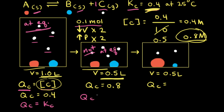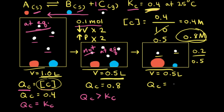In this case, QC is greater than KC, which tells us we have too many products and not enough reactants. Therefore, the net reaction goes to the left to get rid of some of the products and increase the amount of reactants, and it keeps going left until we reach equilibrium again. In the third particulate diagram there are only two particles of C, so that's 0.2 moles divided by a volume of 0.5 liters, which equals 0.4 molar. So QC equals 0.4, and since KC is still 0.4, QC equals KC and equilibrium has been reestablished.